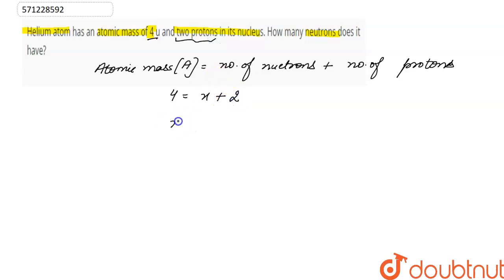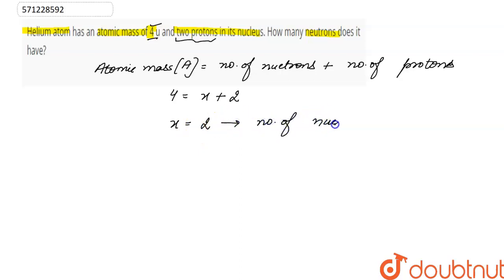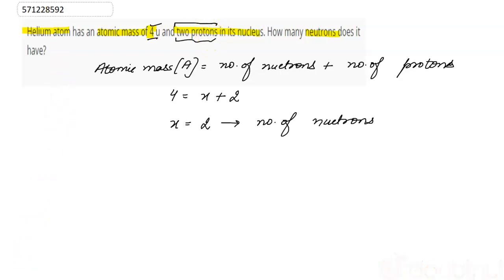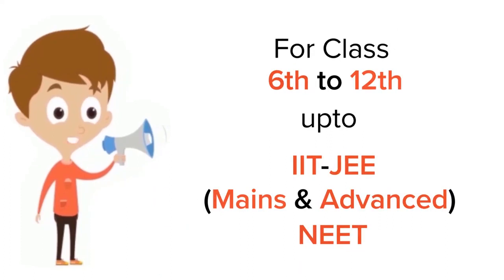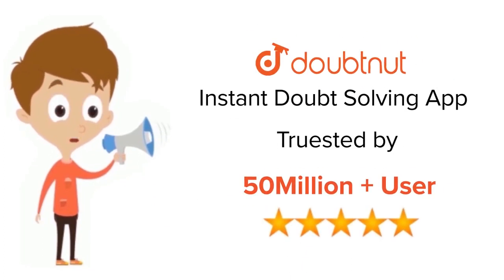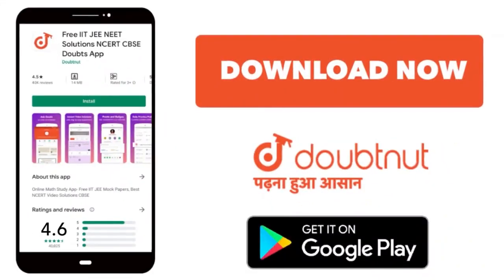So the number of neutrons in the helium atom with atomic mass 4 is 2. These are the number of neutrons for the helium atom when atomic mass is 4 and there are total 2 protons in the nucleus. For class 6 to 12, IIT JEE and NEET level, trusted by more than 5 crore students — download the DoubtNut app today.